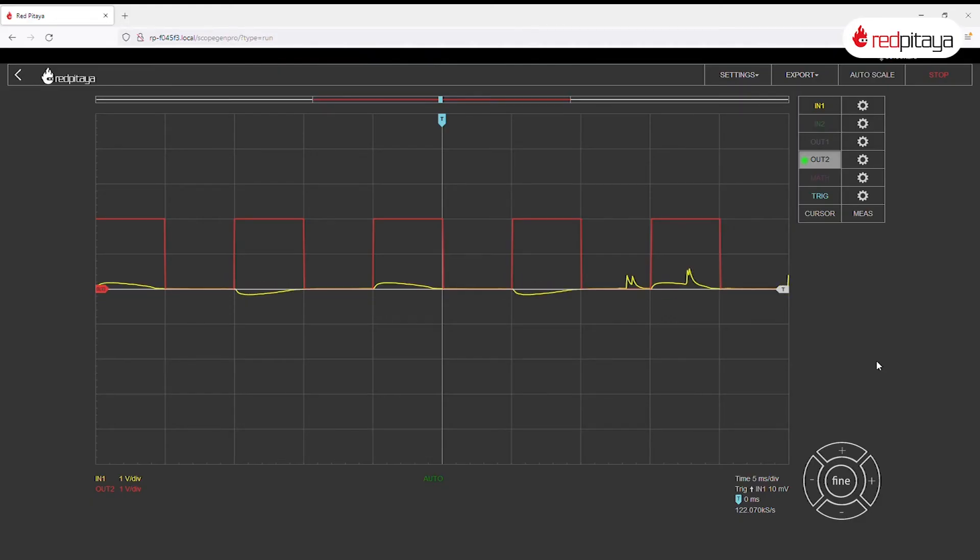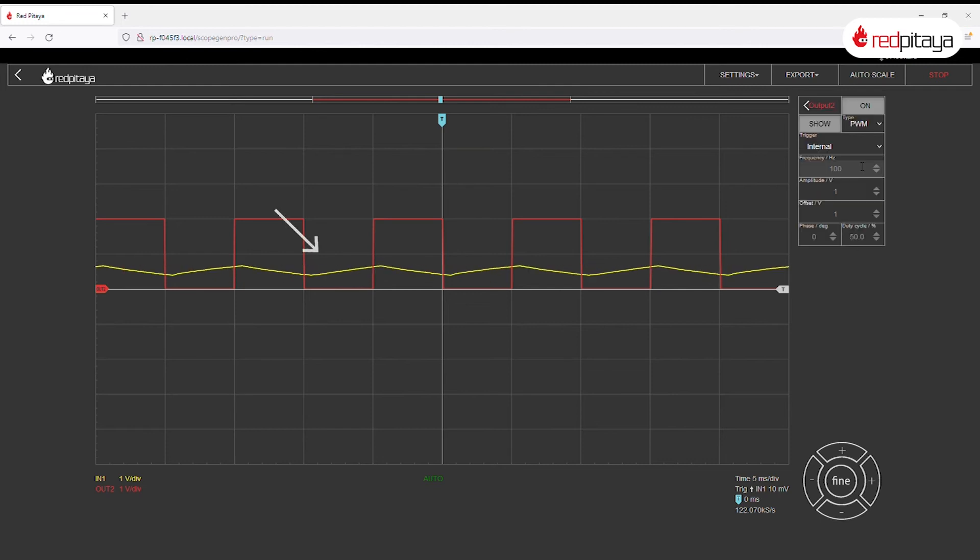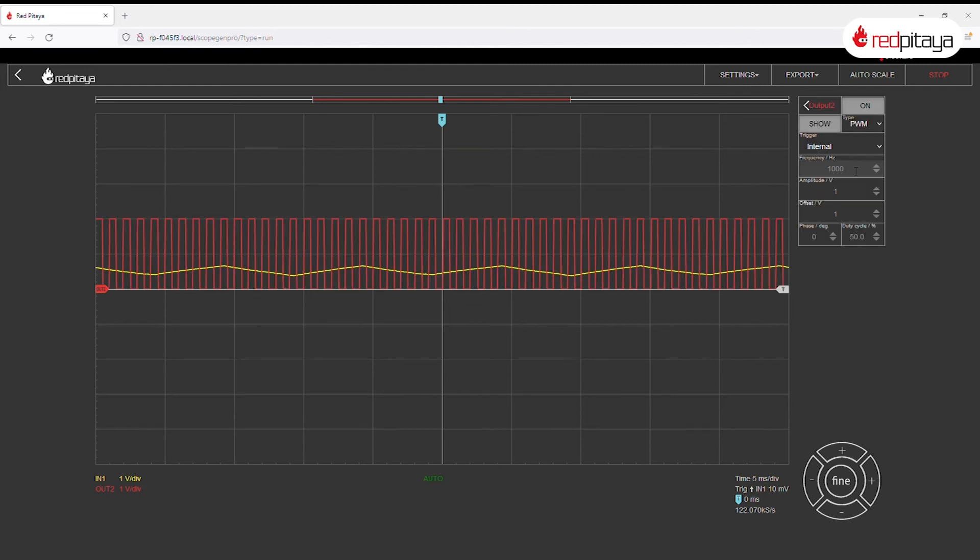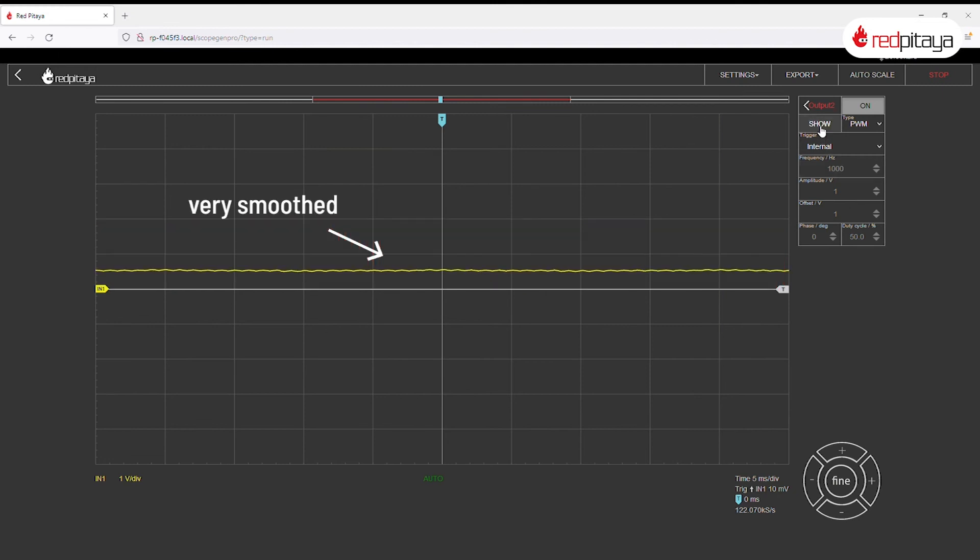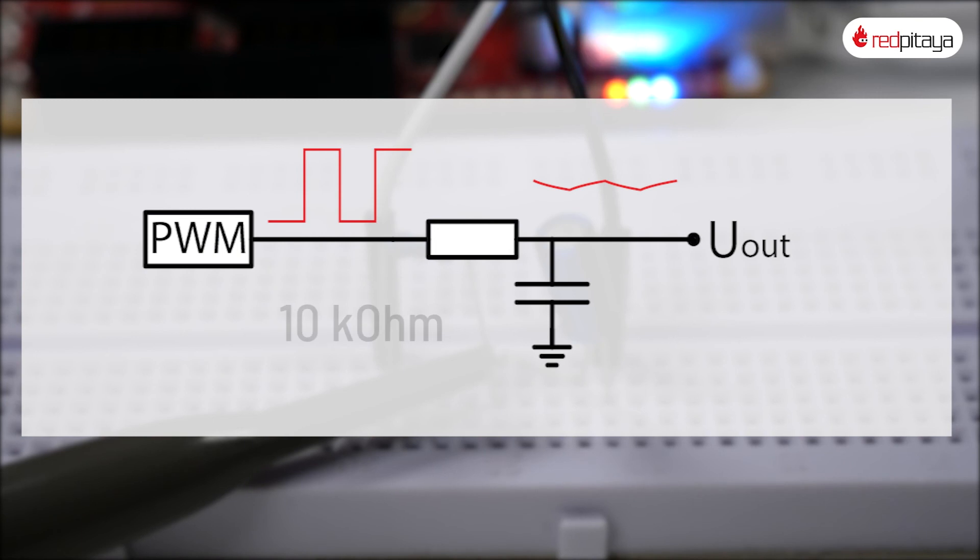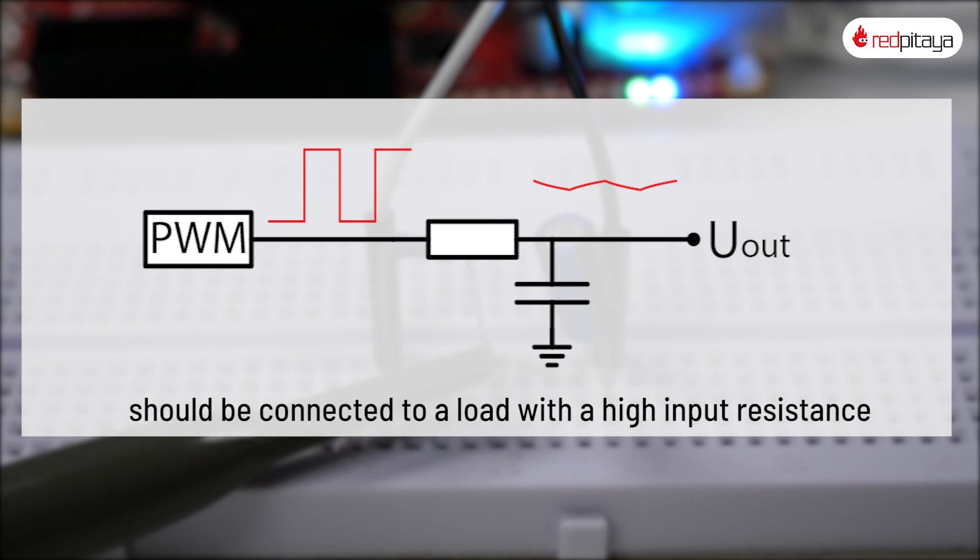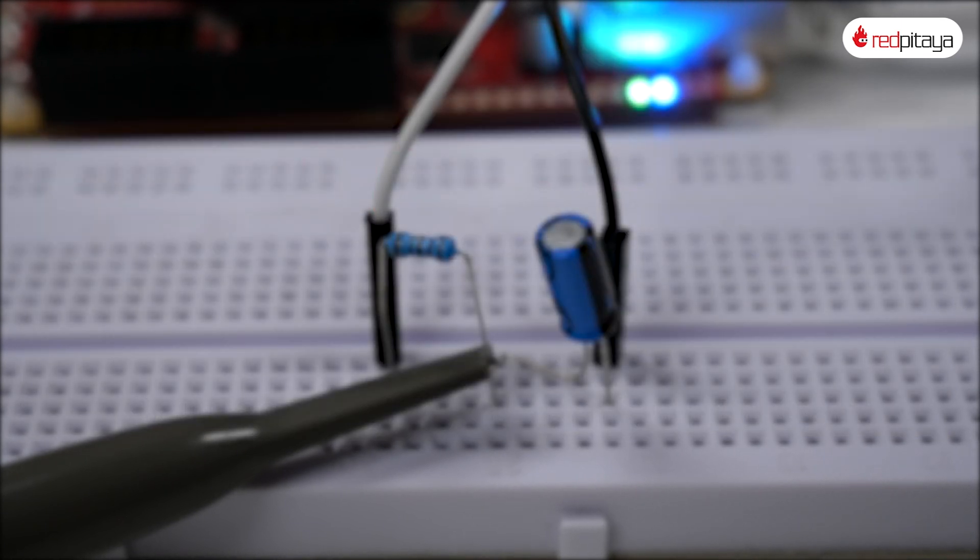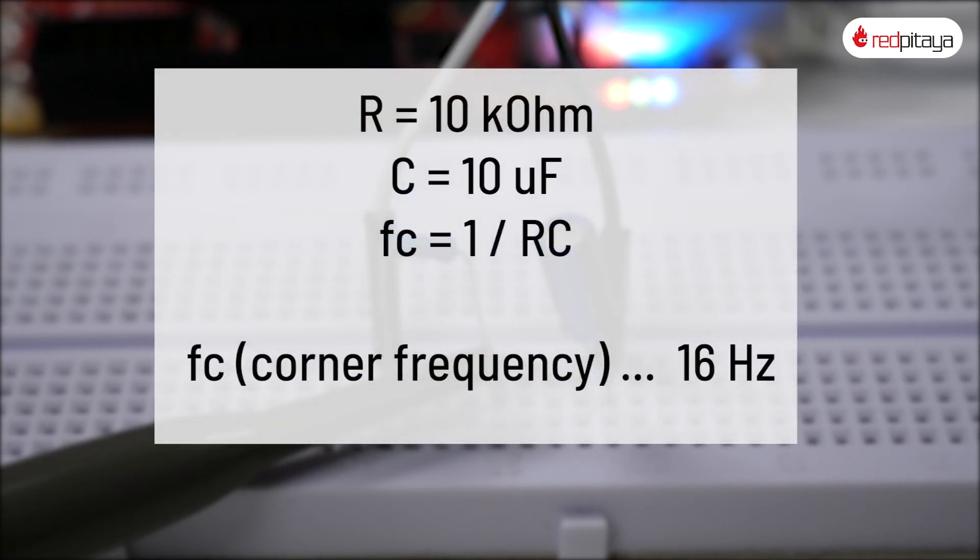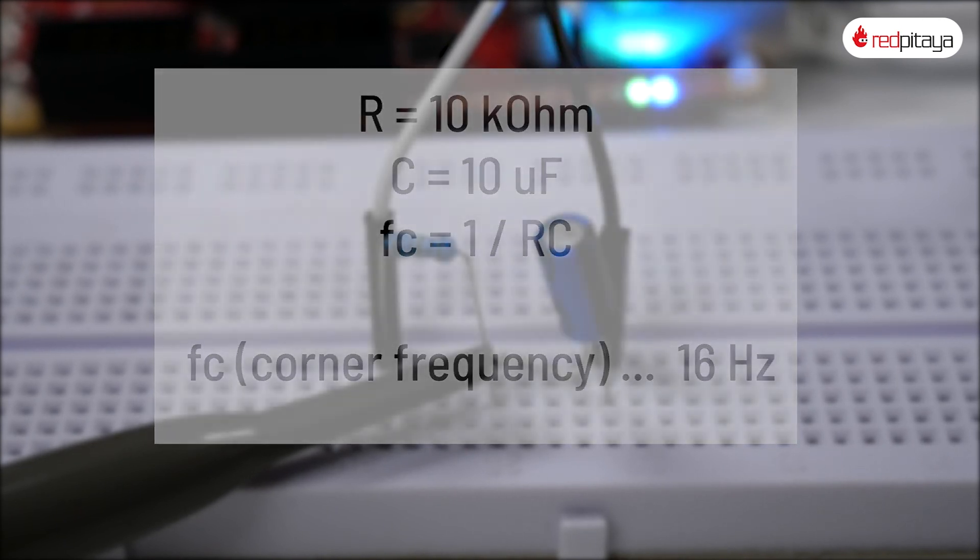At 100 Hz we can see hardly any smoothing. 1 kHz is better. But at 10,000 Hz the signal is as smooth as you may want. Given that the signal passes through a 10k resistor, this signal must obviously be buffered or connected to a load with a high input resistance. Another drawback is that the low-pass filter has a corner frequency of about 16 Hz, meaning that this approach can't be used for generating low-frequency signals.